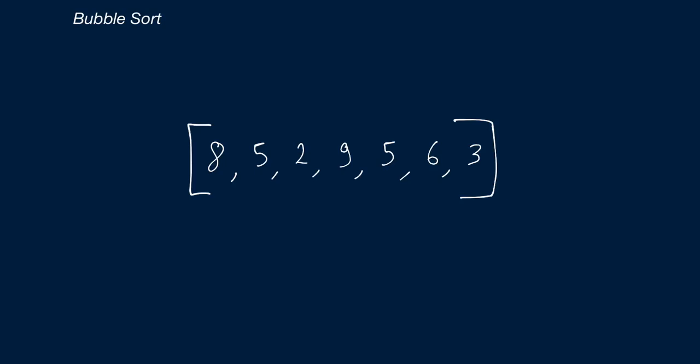It's important to note that bubble sort occurs in place, meaning whenever we swap two numbers in the array, we're doing it in place. We're not putting them in some other helper array, and that differentiates bubble sort from some other sorting algorithms that do use other arrays and aren't in place. So let's actually go through this logic flow on our example.